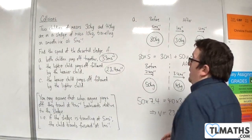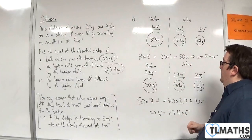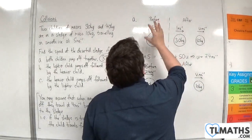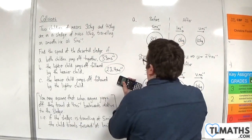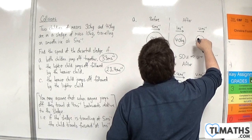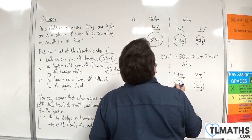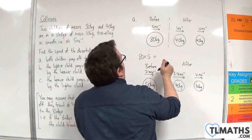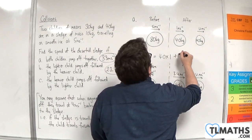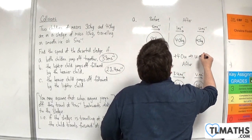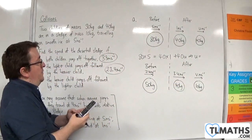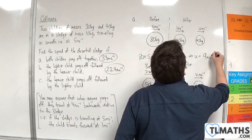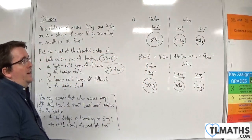Now for part C, the heavier child jumps off first, followed by the lighter child. The heavier child (40 kilos) travels to the right at 1 metre per second, leaving 40 kilos (lighter child plus sledge). Using conservation of momentum: 80 times 5 equals 40 times 1 plus 40 times U. So 80 times 5 minus 40, divided by 40, gives 9. The lighter child and the sledge are travelling at 9 metres per second.